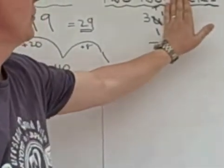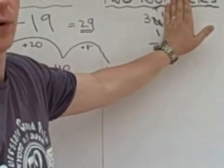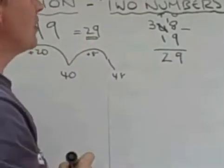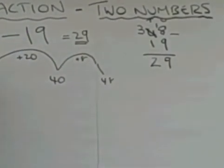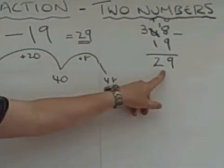And the other question, which is 3 take away 1, which is 2. So the answer to 48 take away 19 is 29.